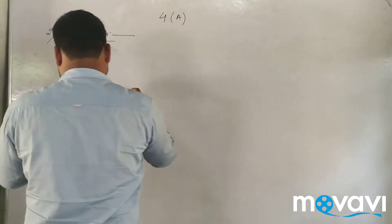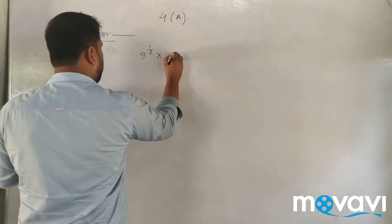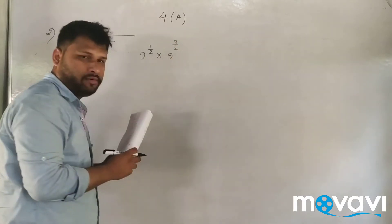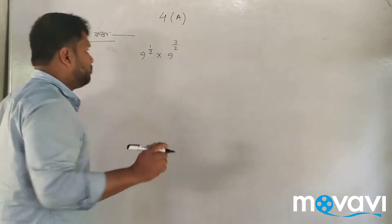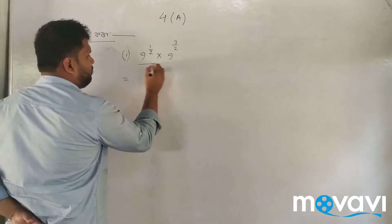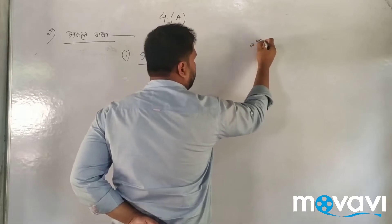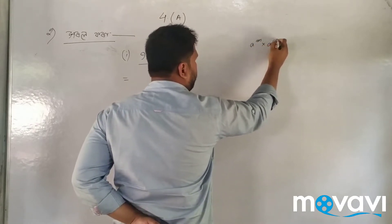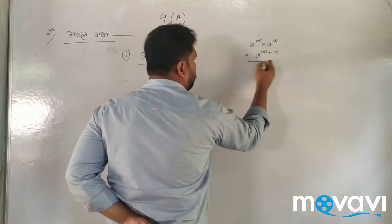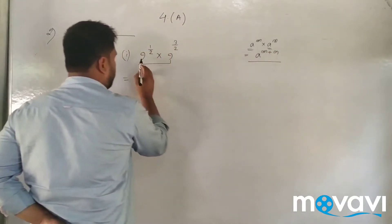So this is 9 to the power of 1 by 2 into 9 to the power of 3 by 2. We have a formula: a to the power of m into a to the power of n is equal to a to the power of m plus n. The base number is 9.